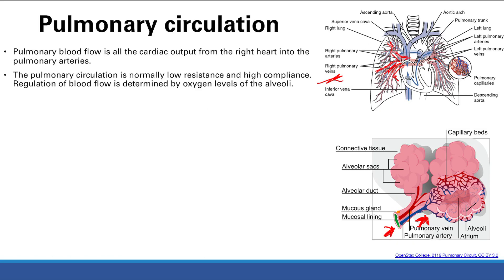Normally, pulmonary circulation is low resistance and high compliance. This allows more blood to flow through the lungs easily, picking up oxygen and getting rid of carbon dioxide.